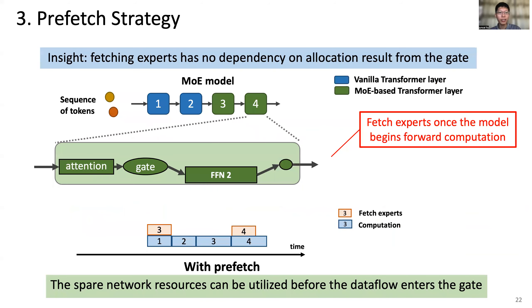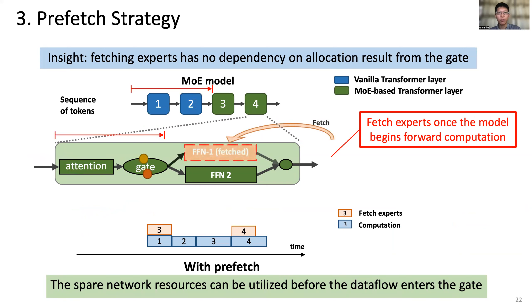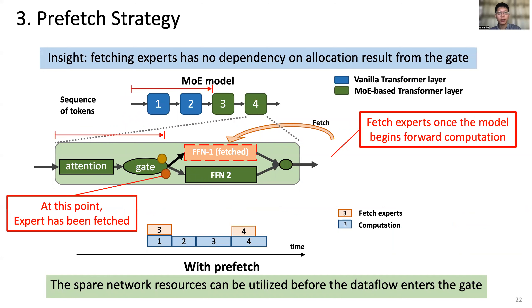The third design is the prefetch strategy. It fetches experts once the model begins forward computation. Suppose a model includes vanilla transformer layers and MoE layers. When tokens go through the vanilla transformer layer, or the attention and gate in the MoE layer, experts are fetched at the same time. When tokens reach the gate, some experts have already been fetched, and the system does not need to wait a long time for fetching experts.